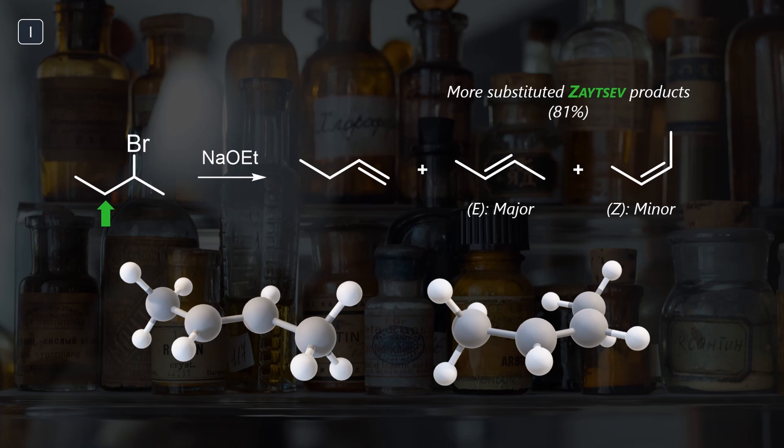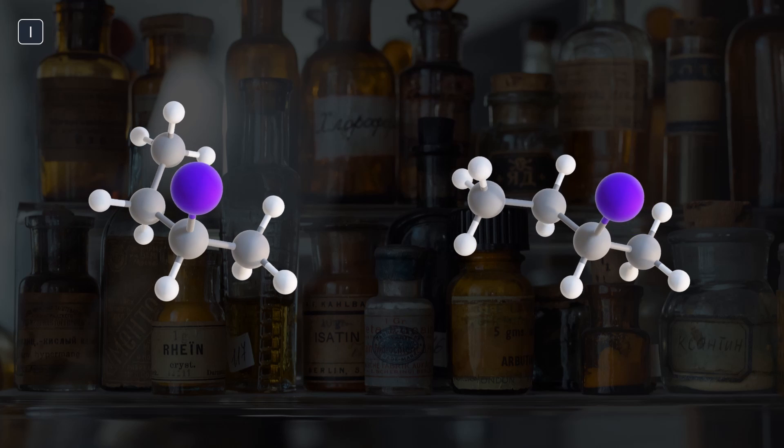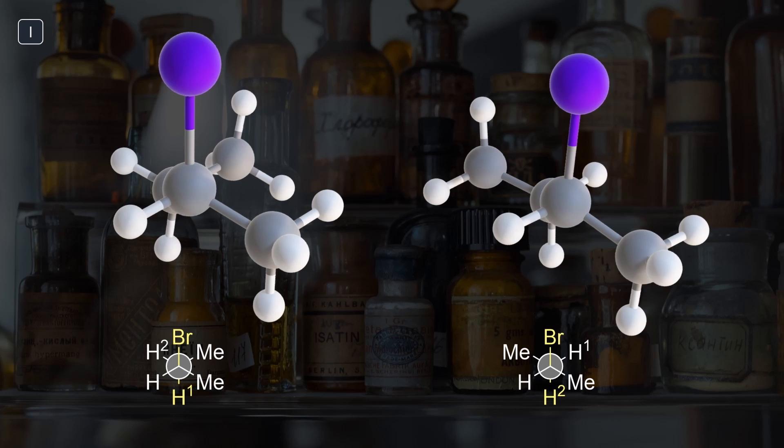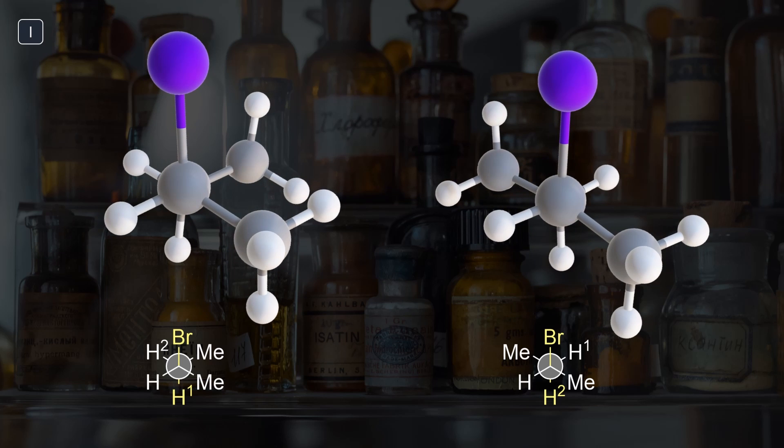How can we rationalize the preferential formation of the E isomer? There are two reactive conformations that position the hydrogen and bromide anti to each other. Newman projections show us what the conformation and transition state could look like. The Z alkene is formed upon deprotonation of H1, but this requires both methyls to be quite close to each other.